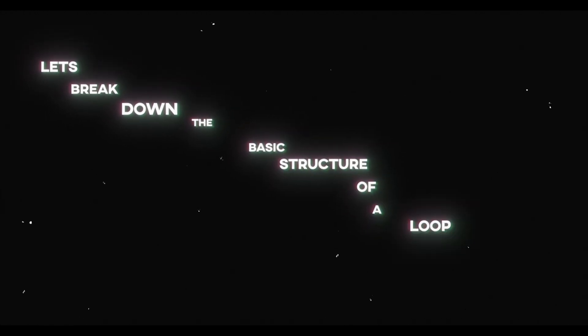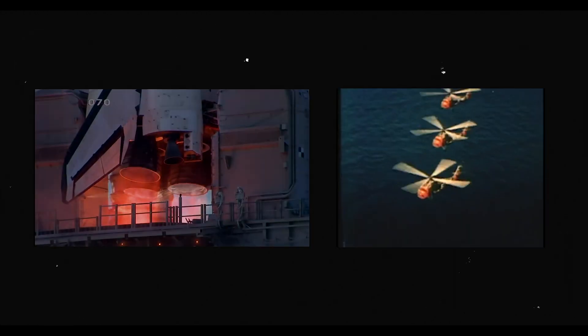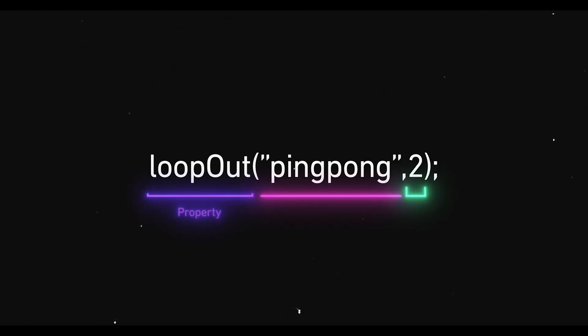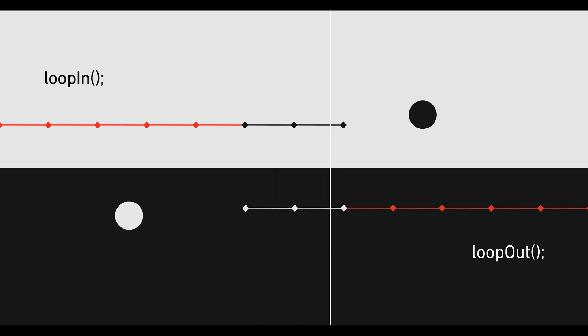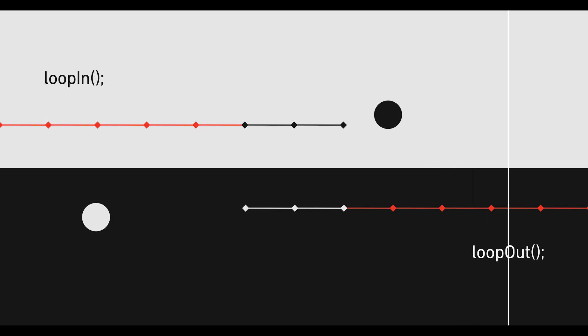Let's break down the basic structure of a loop out expression. There are three parts to it: the property, type, and modifier. You could change the property from loop out to loop in, but in this video we're just going to be talking about loop out. The main difference between the two is that the loop starts before the first keyframe for loop in, and when you use loop out the loop starts after the last keyframe.